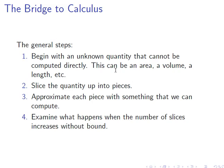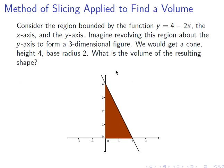So one of my favorite applications of this method of slicing is finding volumes of solids of revolution. So let's consider this right here. We've got the region bounded by the function y equals 4 minus 2x, the y-axis and the x-axis. So that's this triangle right here shaded in red in the picture. Now we're going to imagine revolving this region about the y-axis. So the vertical axis is going to stay fixed. And we imagine sweeping this region out around that y-axis. So it's going to make a three-dimensional figure. It's going to be a cone. The height of the cone is 4 units and the base is 2. And we want to know the volume of the resulting shape.